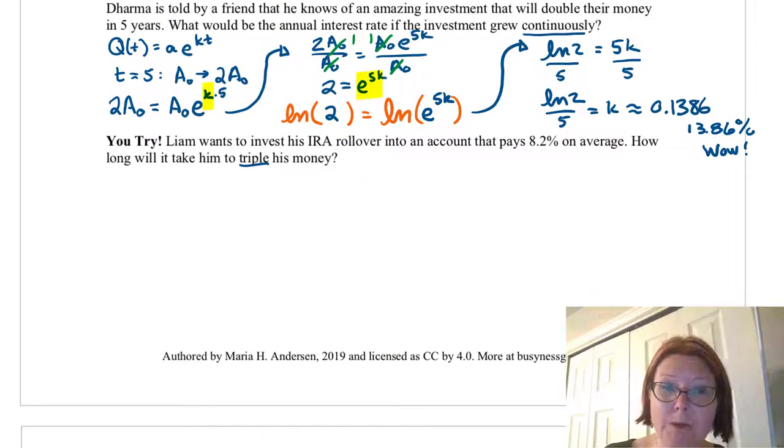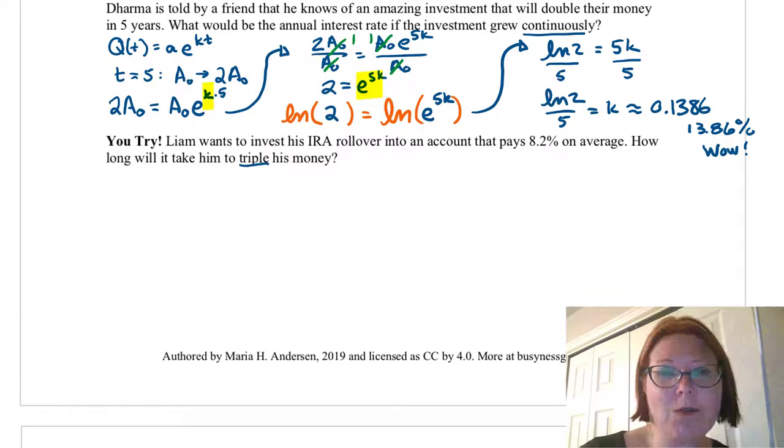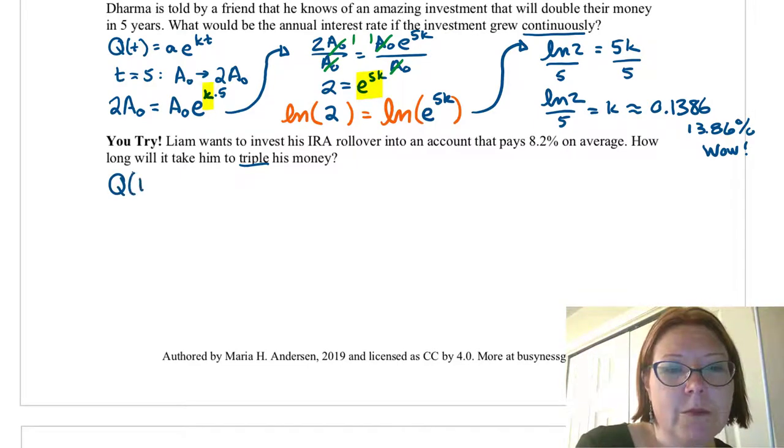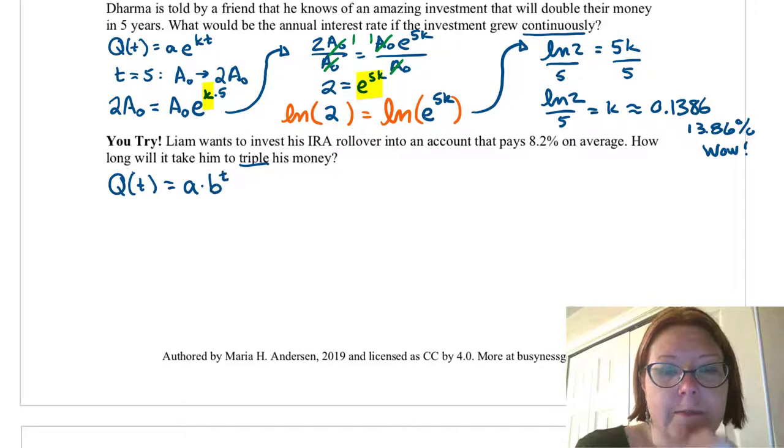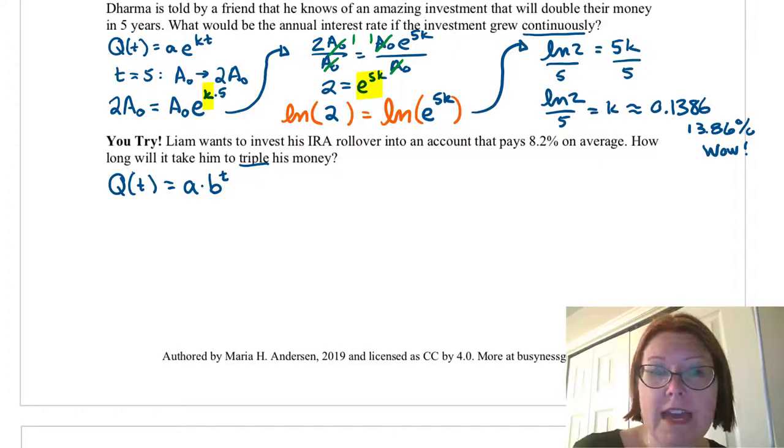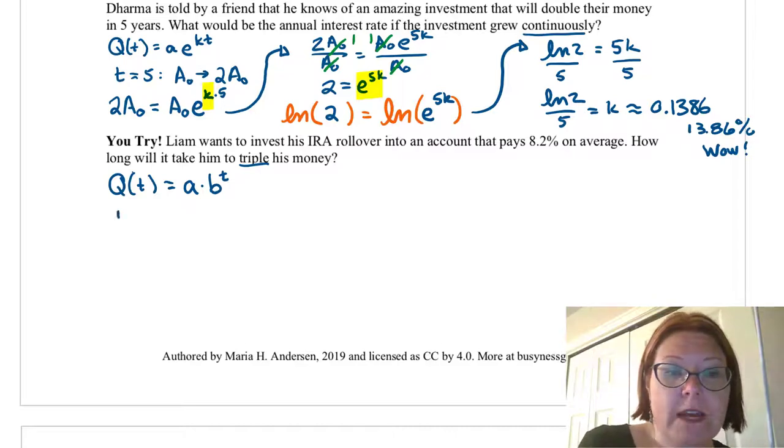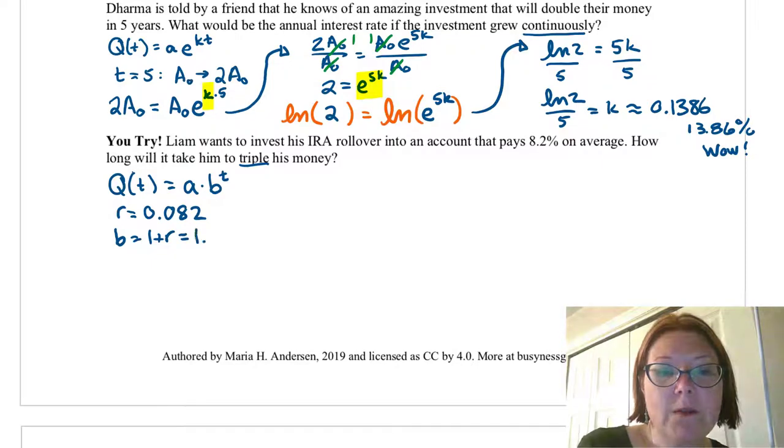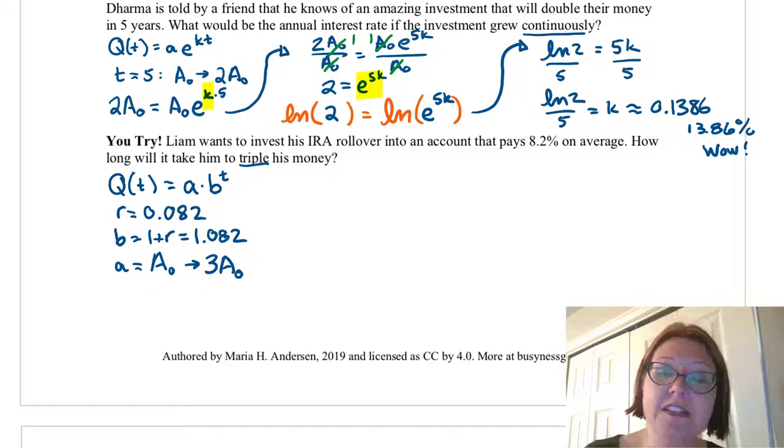Okay, we're back. The model we would want to use here is just the basic exponential growth model. So q of t equals a times b to the t. In this case, we don't know what t is, but we can write down what b is. We know the rate is 0.082, which means that b is 1 plus that rate, which is 1.082. And we know the initial value lowercase a can be written as capital A sub 0. And then the q amount, and then this is growing to be 3 times that amount. So 3 times a sub 0.